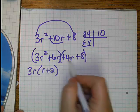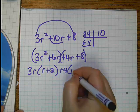What can you factor out of the second part? A positive 4, leaving you with r plus 2.